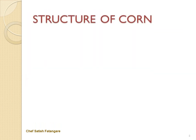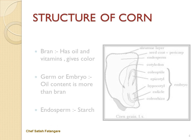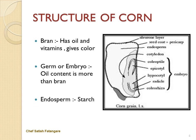In this slide we will learn about the structure of corn. The types listed include sweet corn, dent corn, flint corn, waxy corn, ornamental corn, blue corn, dried corn, and baby corn.